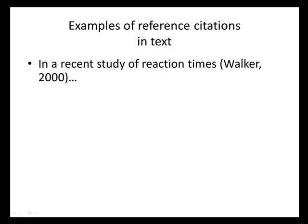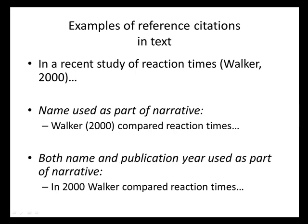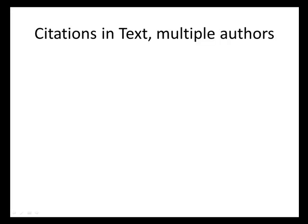Here are some examples. In the first example, we would read the sentence and skip over the author and date. But we can include the author, Walker, as part of our narrative — so, 'Walker compared reaction times' — there is information that leads the reader to look at the reference list for Walker 2000. We can also state 'In 2000, Walker compared reaction times,' and that is enough information to find the citation in the reference list.